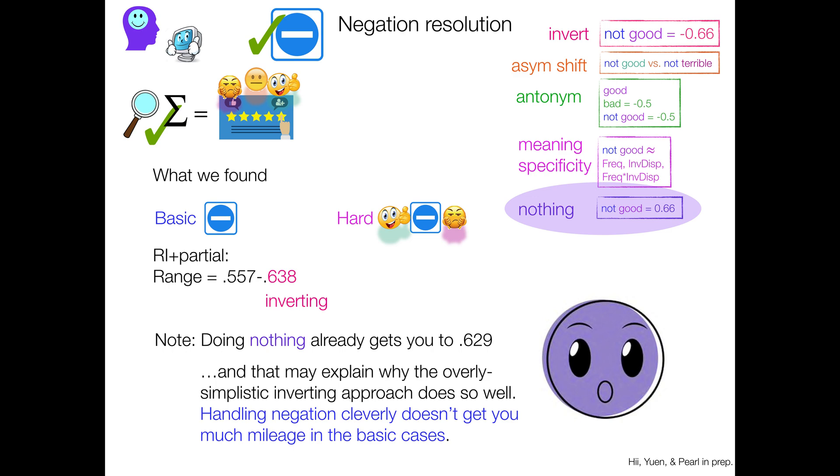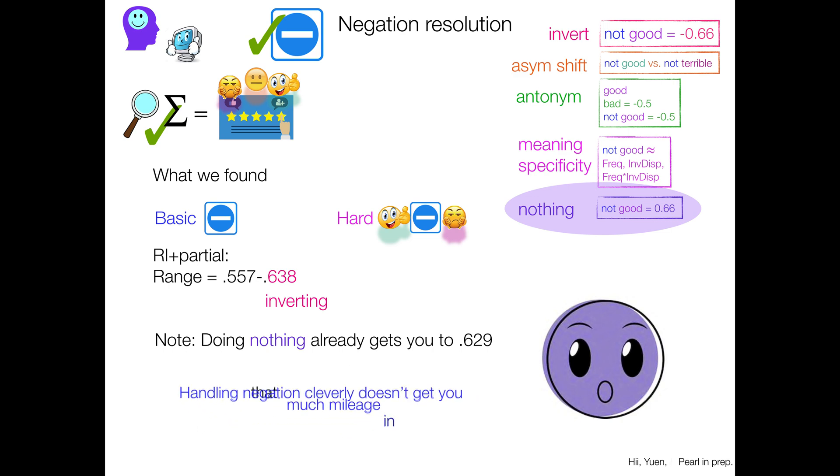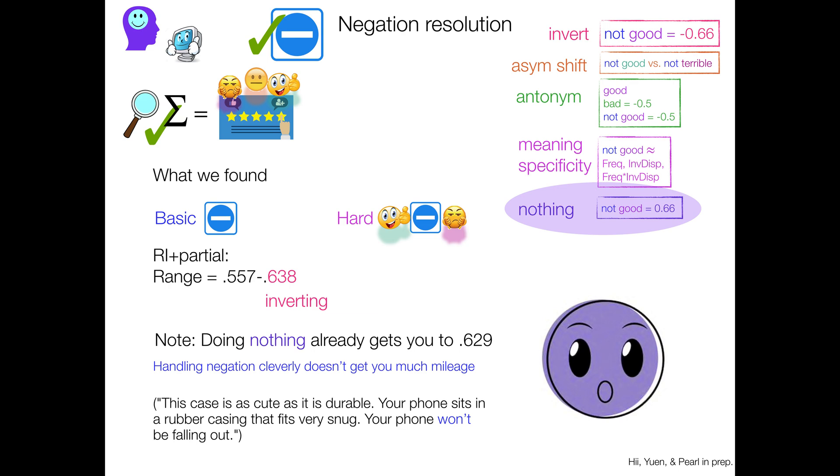And you might be wondering, why is that? So here's an example of one of our basic data points that has negation in it. This is the negation word won't. It has that nt in there, which is a negation word. So this case is as cute as it is durable. Your phone sits in a rubber casing that fits very snug. Your phone won't be falling out. Okay, so let's look at here. So the sentiment words, really sentiment bearing words, are mostly very positive. And you have one negative one, like falling out. And that's under the scope of negation.